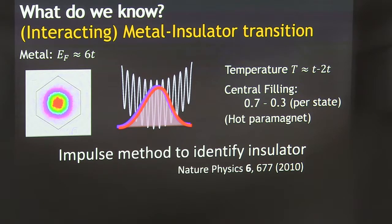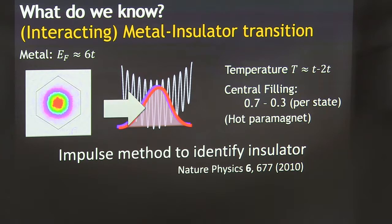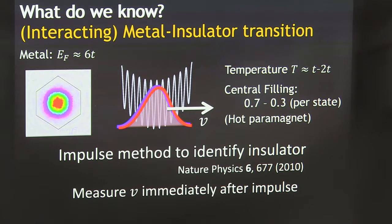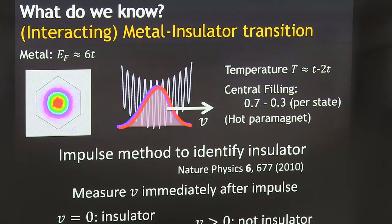What we used in this measurement to identify a metal-insulator transition as we turned on disorder — this was in a clean system — is an impulse method that we first used to measure the superfluid and Bose glass transition in 3D. In that measurement, all we do is apply an impulse, a force for a short period of time to the gas, and then measure the velocity afterwards after that impulse. All we say is that if the gas doesn't move, it's an insulator and all the states are localized. If the gas moves and there's velocity, it's something else.